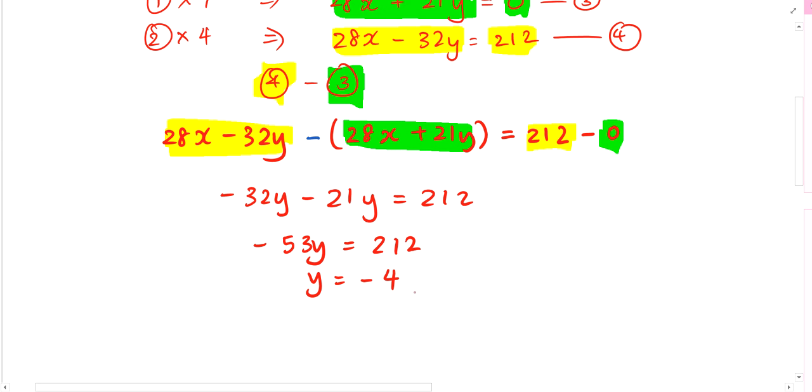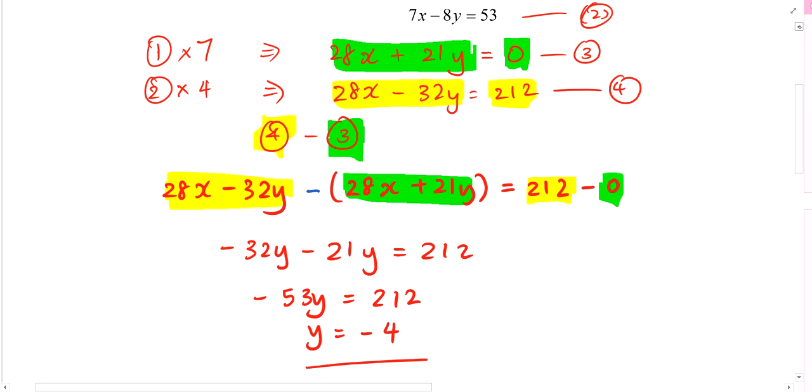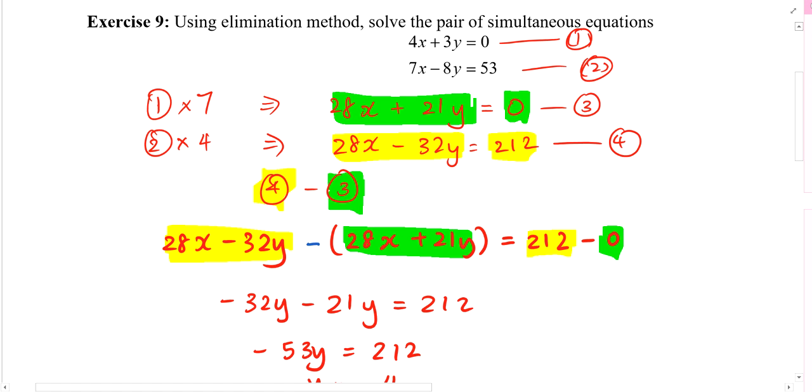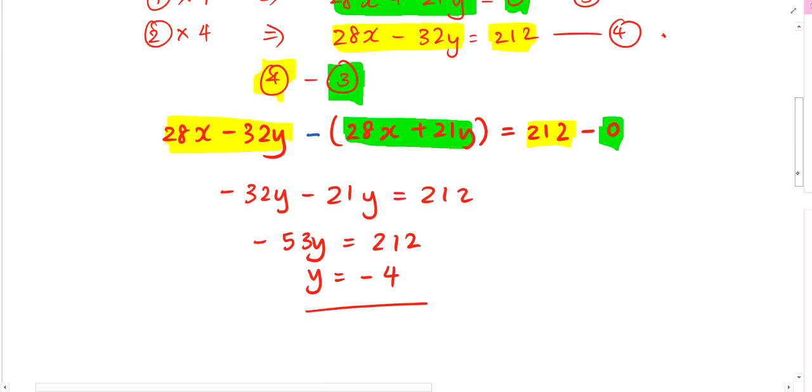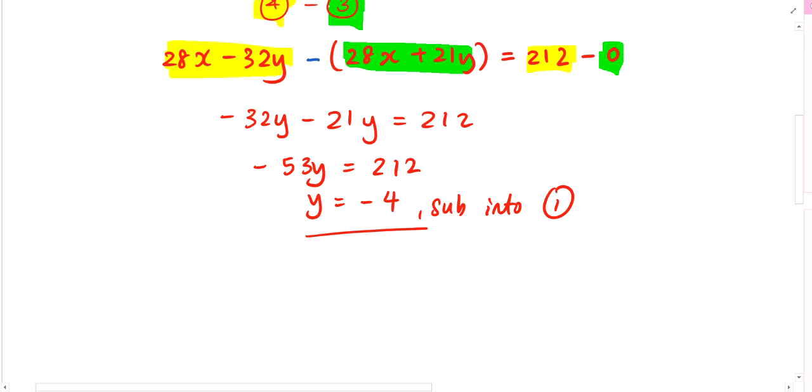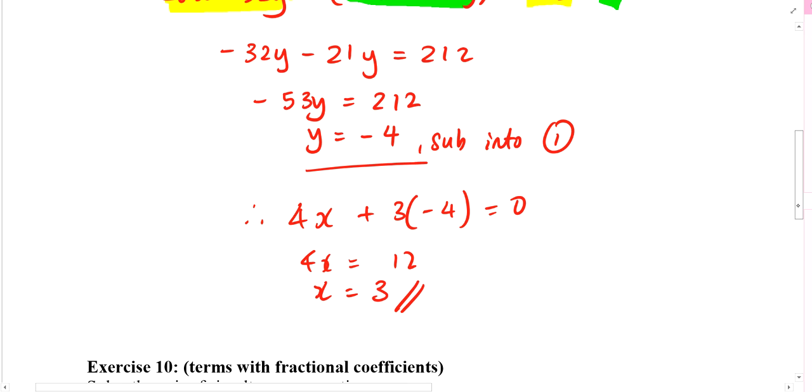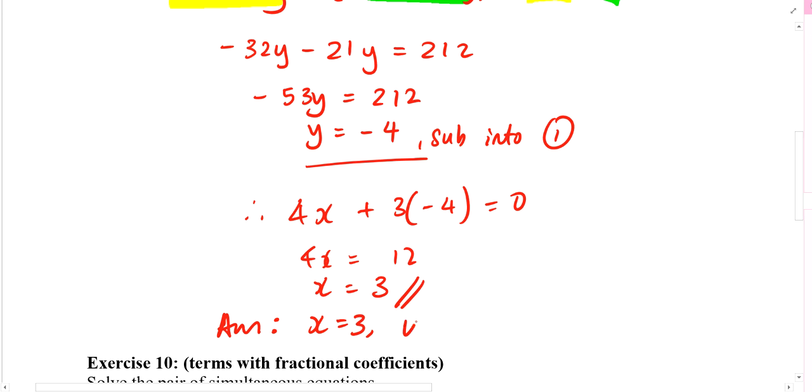Now from here, I've got one answer which is the value of y. My answer is incomplete. I'm missing something else. What am I missing? X. Yeah. So how do I find X? Sub into? I've got one, two, three, four. Which one should I sub in? Anything. Literally anything. Your friends all can choose different ones. You will all get the same answer. You can try yourself. But I'll try and choose something that's convenient. I think one is rather convenient. So sub into one, 4x plus 3y is zero. Four x plus three negative four equals to zero. Four x equals to 12. X must be equal to three. So my final answer is that X equals to three, Y equals to negative four.